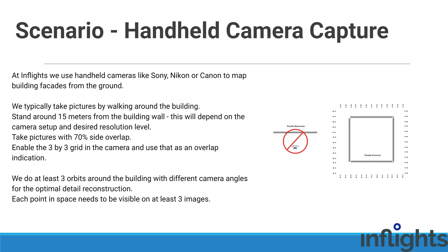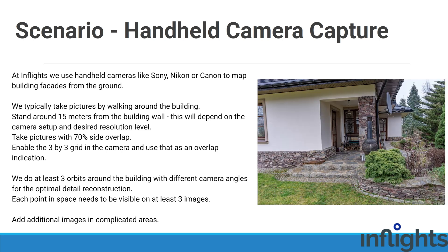We do at least 3 orbits around the building with different camera angles for optimal detail reconstruction. Each point in space that we want to reconstruct must be visible on at least 3 images — this is especially important for areas around balconies and windows. Do separate orbits with different camera angles, as standing in one place and tilting the camera does not work well in photogrammetry software. Add additional images in complicated areas like around trees close to building entrances and L-shaped surfaces.